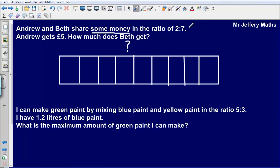What we know is that Andrew got two of these parts and we know that was worth five pounds. What we then need to do is figure out what one of the parts was worth. Well, one of the parts is just going to be five pounds divided by two, so that's going to be two pounds fifty. So each of these parts are worth two pounds fifty.